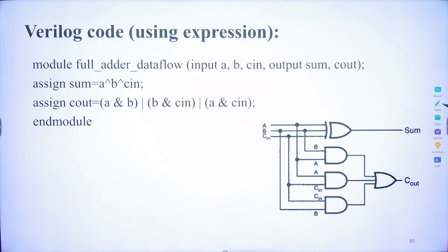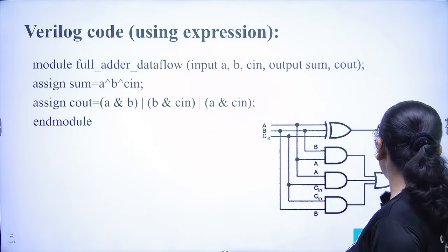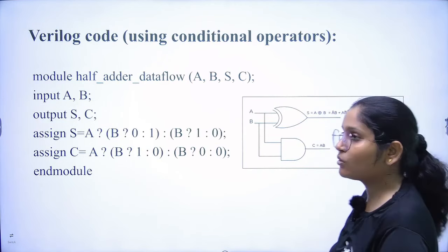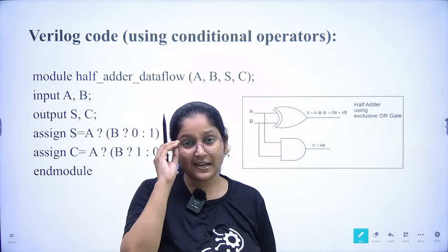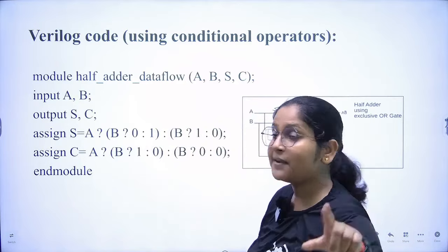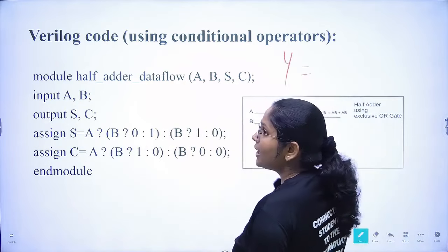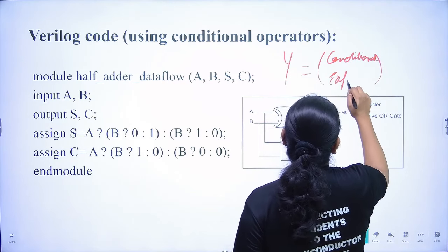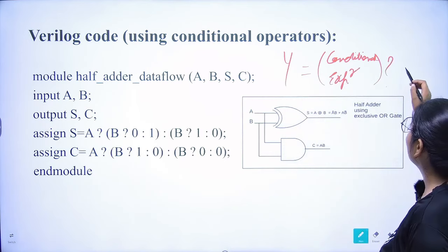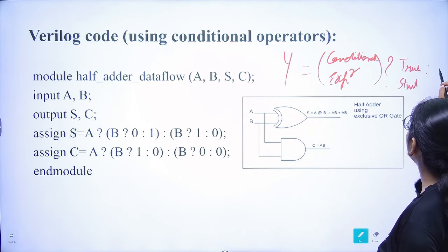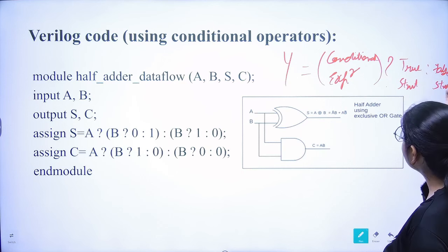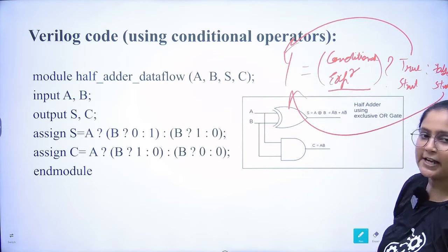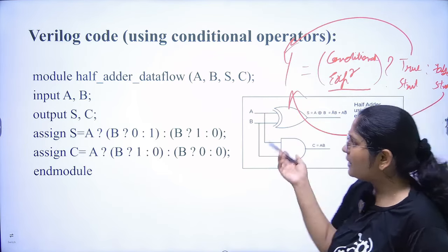Now for conditional operators — I discussed these earlier. In conditional operators, we check for a certain condition: if it is true, the true statement executes; if false, the false statement executes. In other words, if a condition is true, one value is assigned to y; if false, another value is assigned to y.